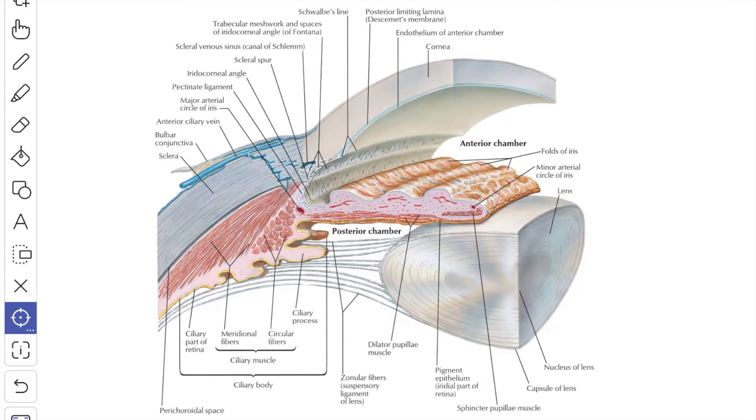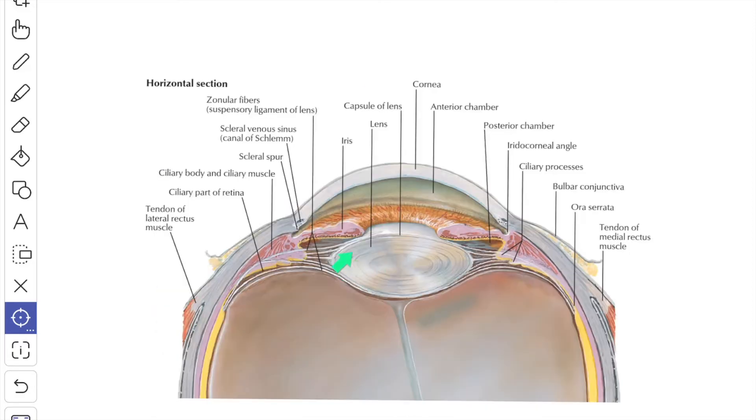The iridio-corneal angle can be examined in vivo by a special instrument known as the gonioscope, which comprises a corneal microscope and a special contact lens. Next, we will see about the lens. The lens is a transparent, biconvex, flexible body that intervenes between iris in front and vitreous body behind.